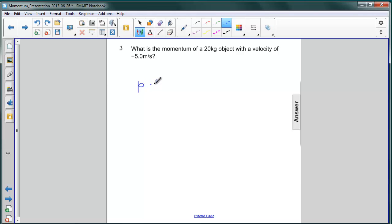Again, p equals mv. m is still 20 kilograms. And v, this time, is equal to negative 5 meters per second.